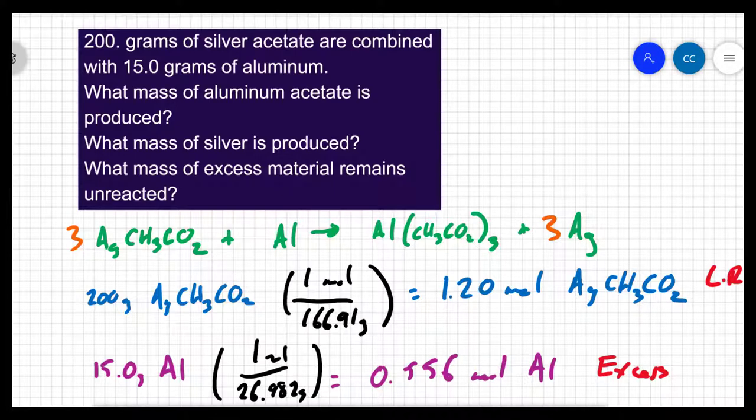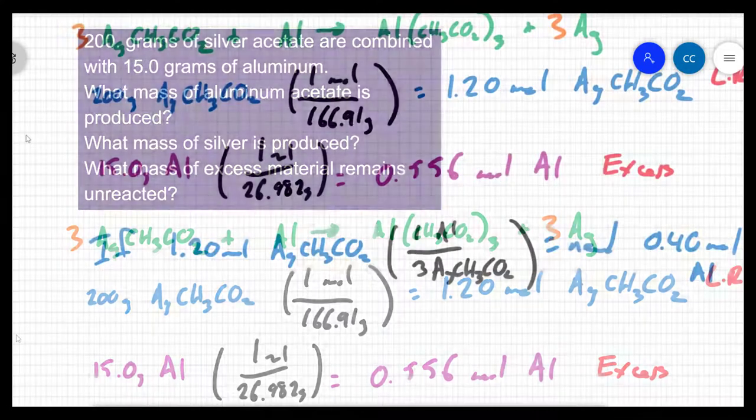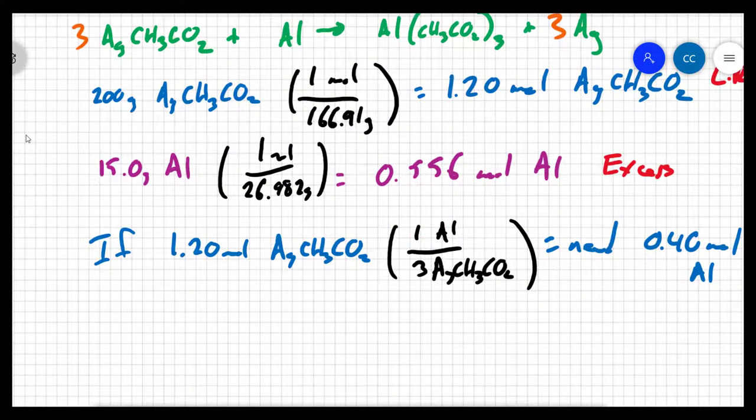So don't always go with the smallest number as your limiting reactant. Now that I know that the silver acetate is my limiting reactant, I can use that to find my product. So the first product we're going to do is the aluminum acetate.